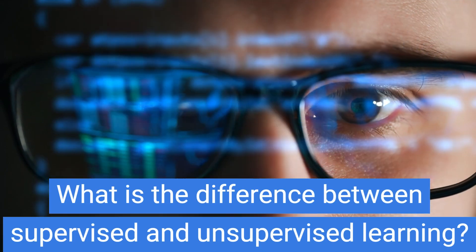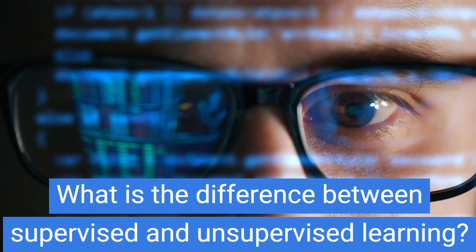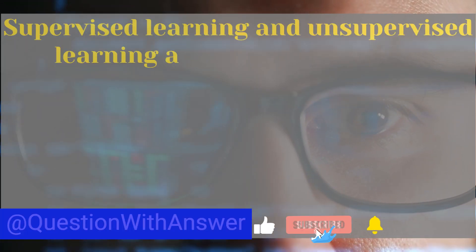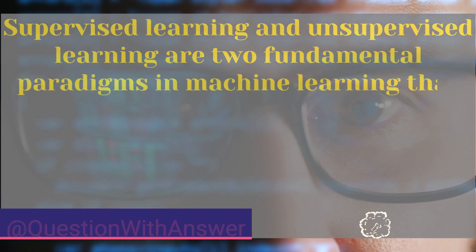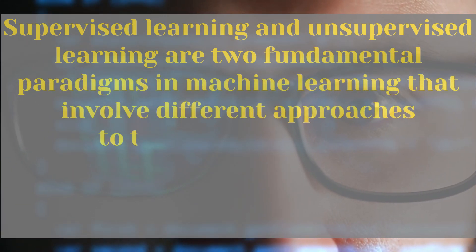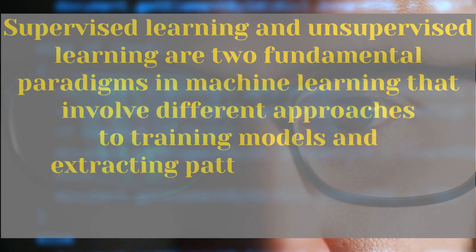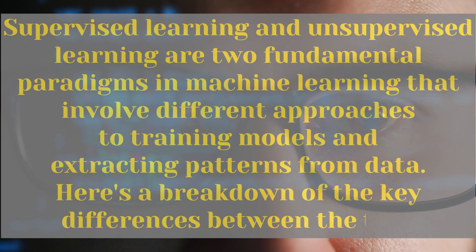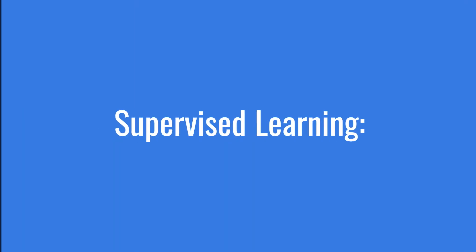What is the difference between supervised and unsupervised learning? Supervised learning and unsupervised learning are two fundamental paradigms in machine learning that involve different approaches to training models and extracting patterns from data. In supervised learning, the model is trained on a labeled dataset, where each data point has both input features and corresponding target labels.